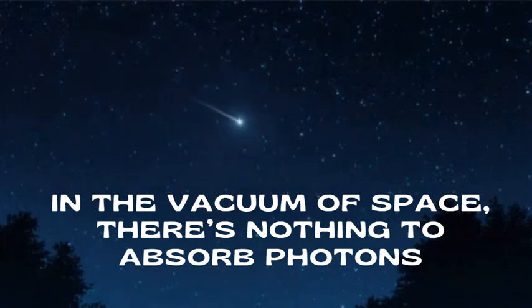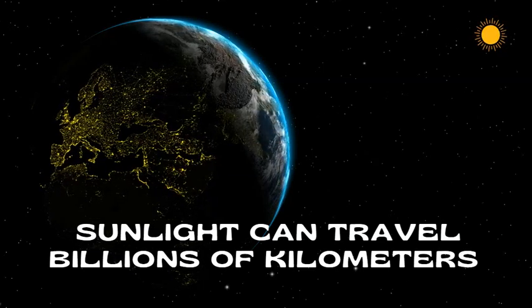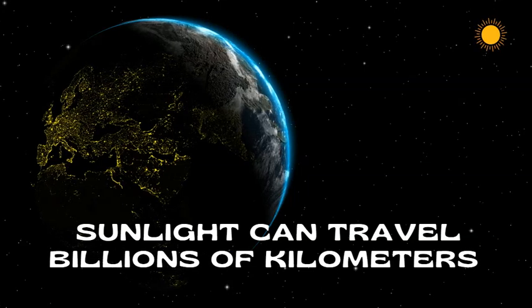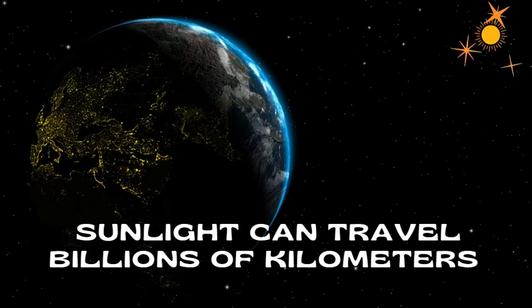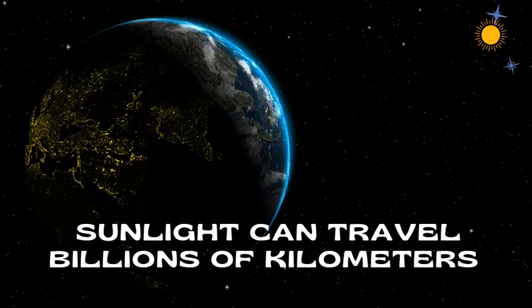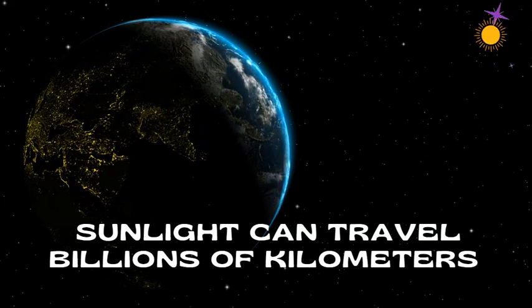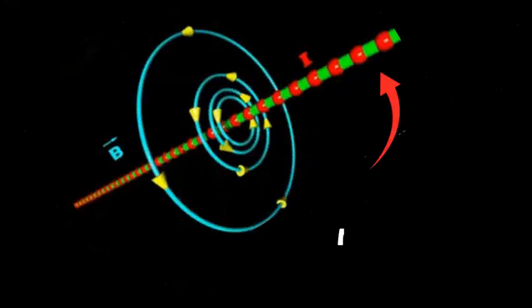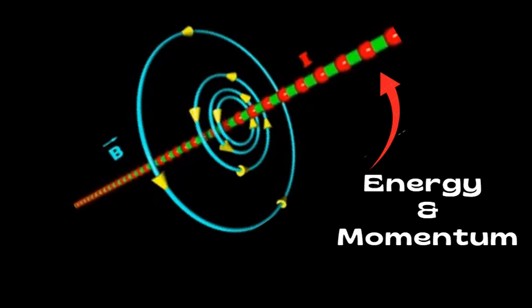Now, here is why this matters. In the vacuum of space, there is nothing to absorb photons, no air resistance, no particles, no obstacles. Their energy and momentum remain unchanged because in a vacuum there is nothing to absorb or slow them down. This is why sunlight can travel billions of kilometers across the solar system or why we can see light from stars that are millions of years old.